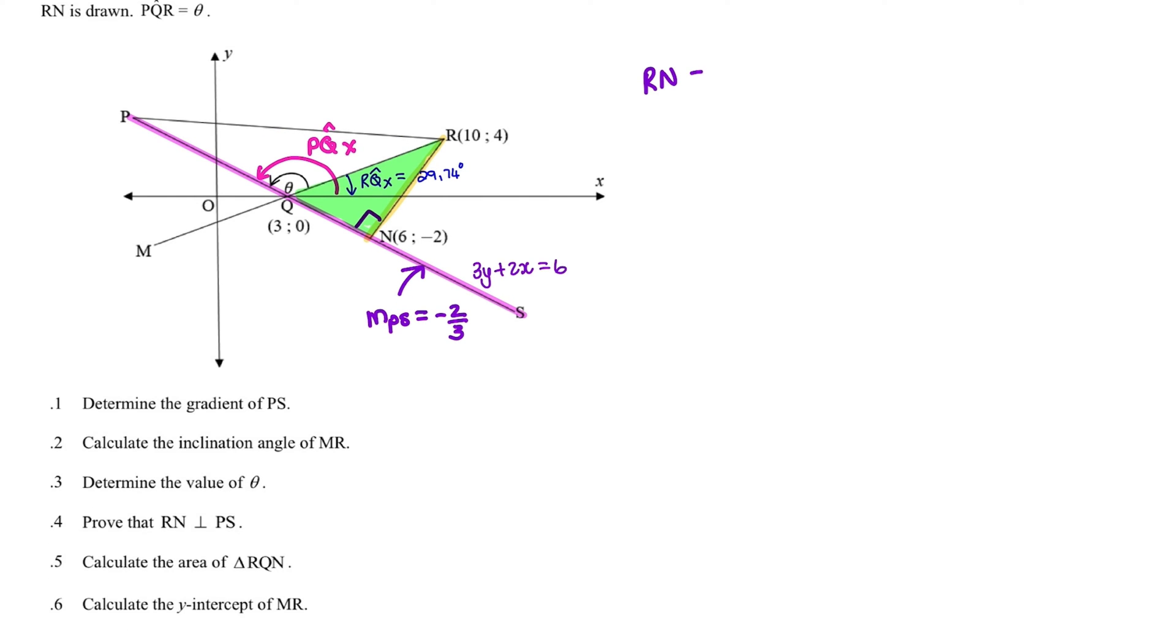So RN is equal to the difference of X's. So it's XR minus XN squared plus the difference of Y's, which is YR minus YN squared.